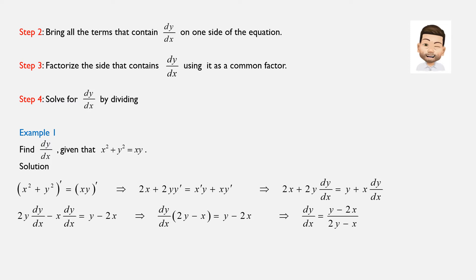Now, moving to step two, we bring all terms containing dy over dx to one side — I picked the left side. We write 2y times dy over dx minus x times dy over dx equals y minus 2x. Then, in step three, we factor out dy over dx: dy over dx times (2y minus x) equals y minus 2x. And finally, dividing, we get dy over dx equals (y minus 2x) over (2y minus x).